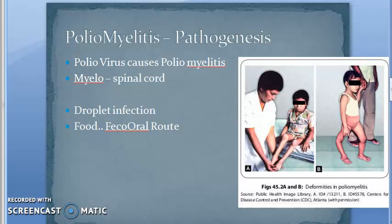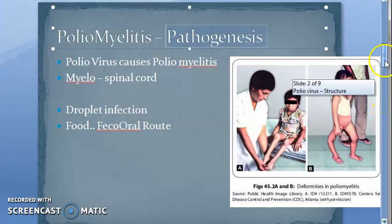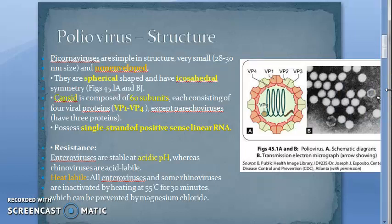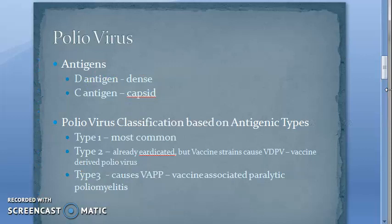Welcome. In this video we want to look at the pathogenesis of poliomyelitis. So far we have seen it is a picornavirus with icosahedral symmetry, spherical, non-enveloped capsid with 60 subunits, heat labile, likes acid pH. We saw the antigens D and C, and polio types: type 1, type 2, type 3.